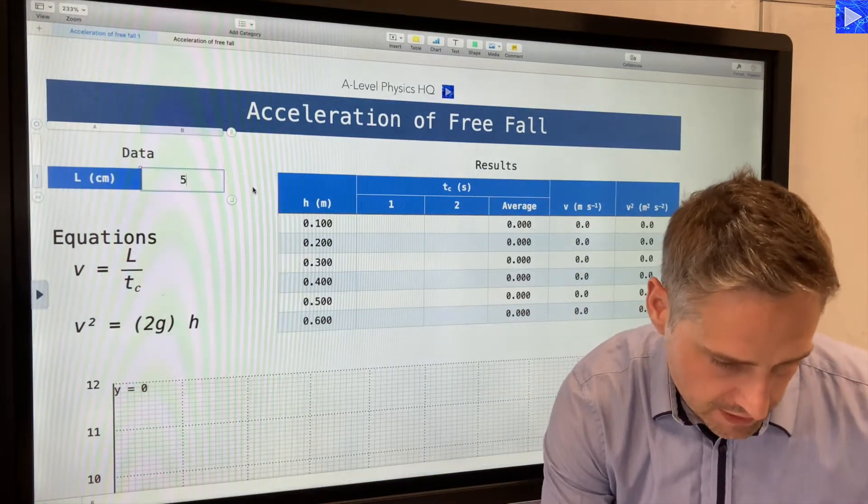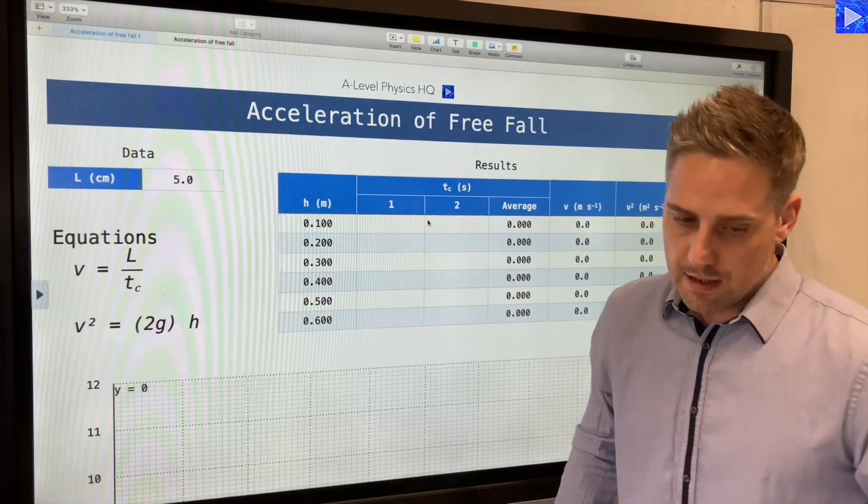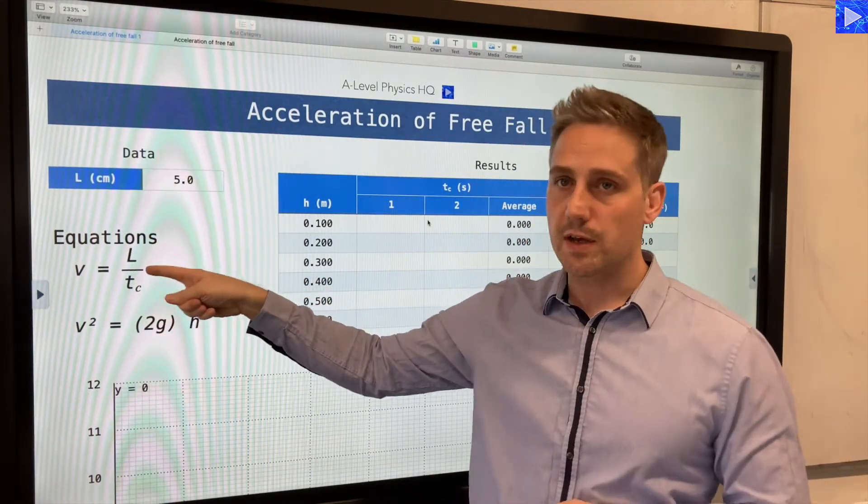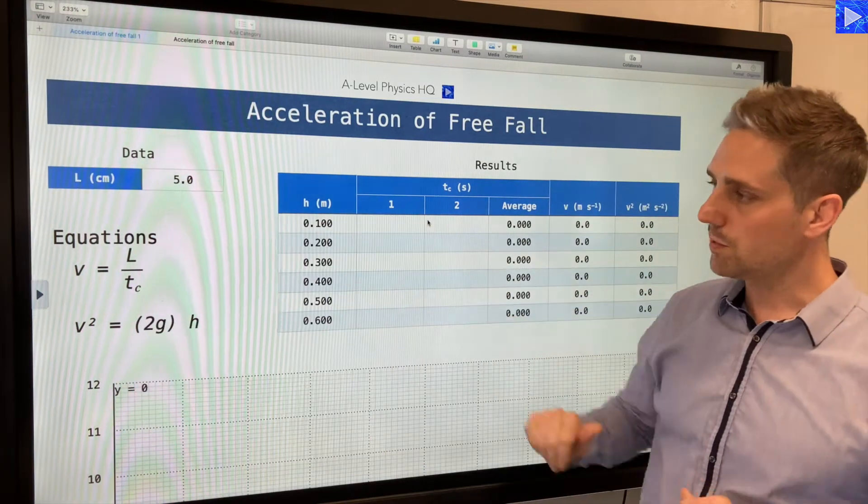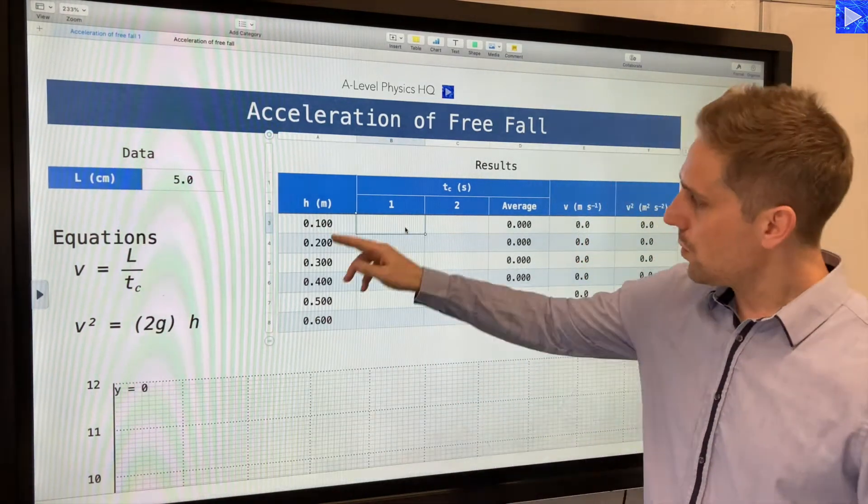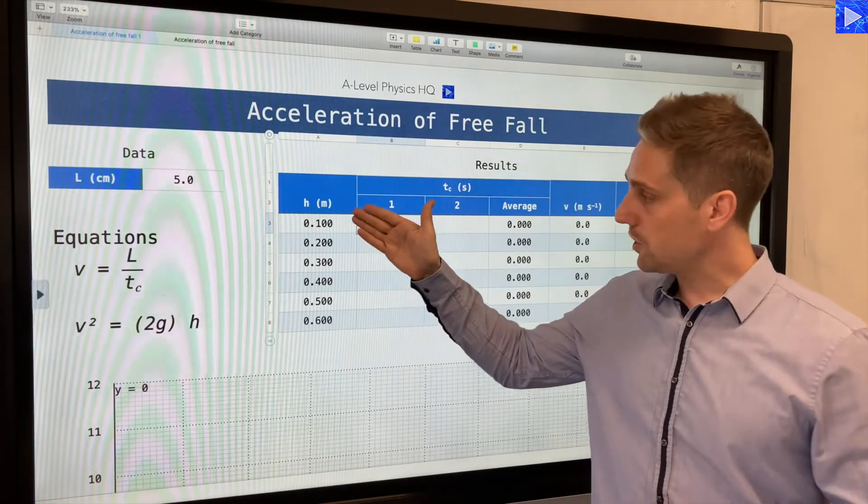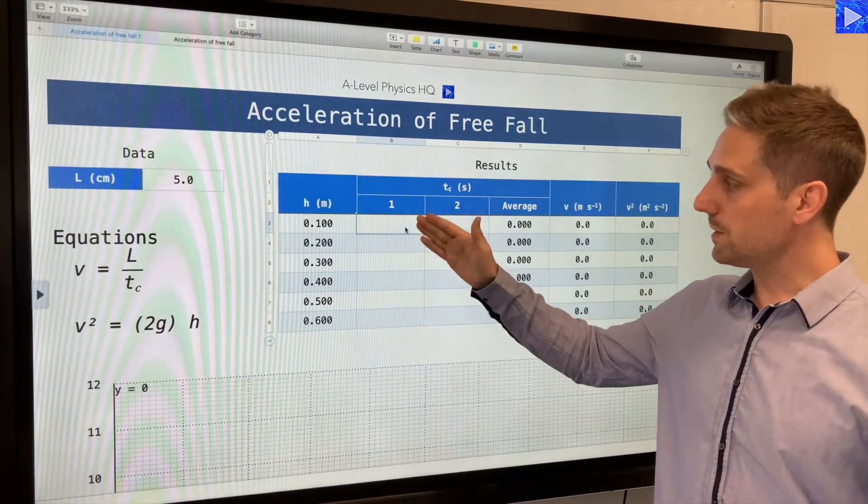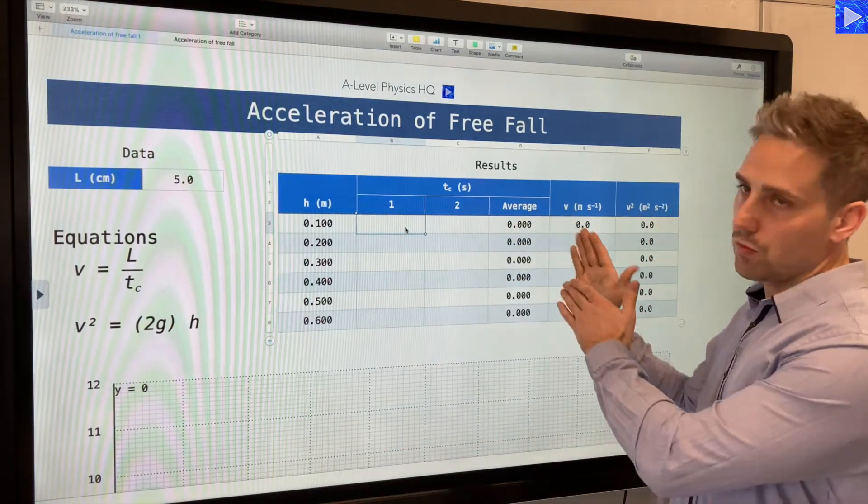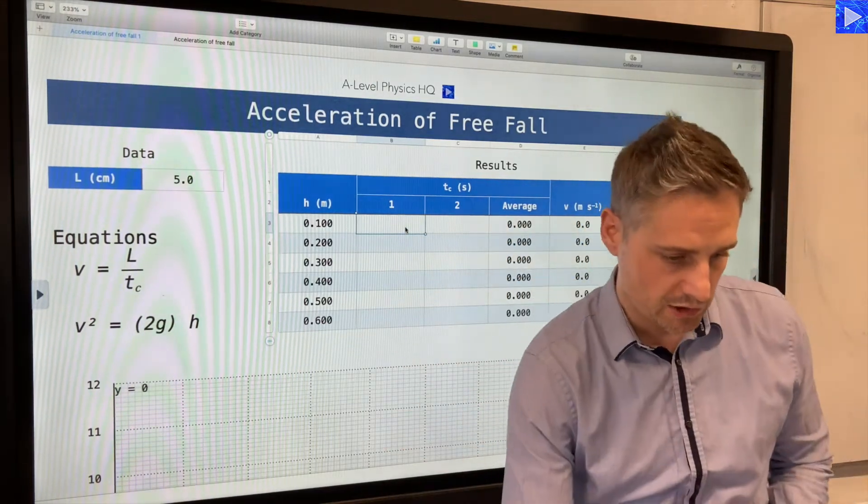We need to remember when we're calculating the velocities in this equation that we need to convert that L value that we've inputted into meters. We conducted the experiment over a range of 10 centimeters to 60 centimeters. Let's put that data in and then we'll have a look at the subsequent calculations.